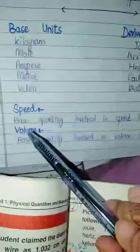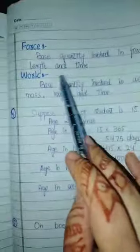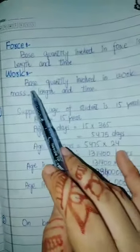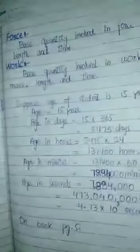Next you have force. Base quantity involved in force is mass, length, and time. Then work: base quantity involved in work is mass, length, and time.